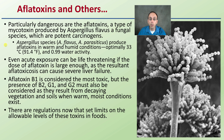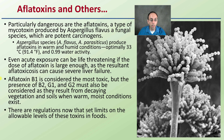Even acute exposure can be life-threatening if the dose of aflatoxin is large enough, as the resultant aflatoxicosis could cause severe liver failure. There are different aflatoxins — B1 is considered the most toxic, but B2, G1, and G2 must also be considered, as they result from decaying vegetation in soils when warm, moist conditions exist.